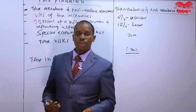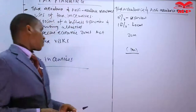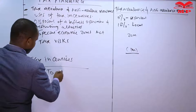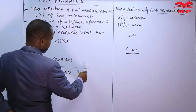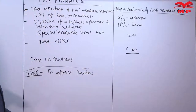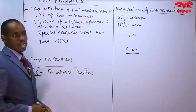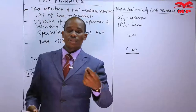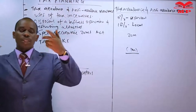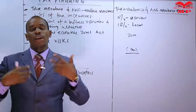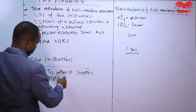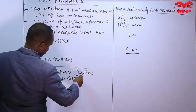Number one, the government grants tax incentives to attract investors - both local and international. When we give tax incentives like capital allowances and investment deduction, we tend to attract investors, and when they invest, the government tends to raise more and more revenue. We also give tax incentives to motivate existing taxpayers.